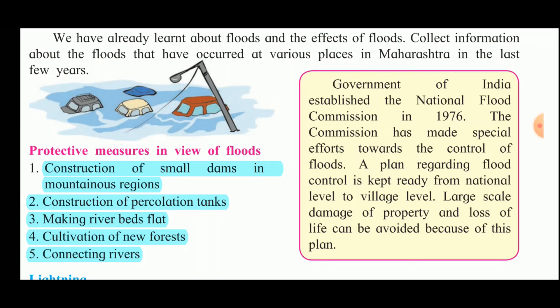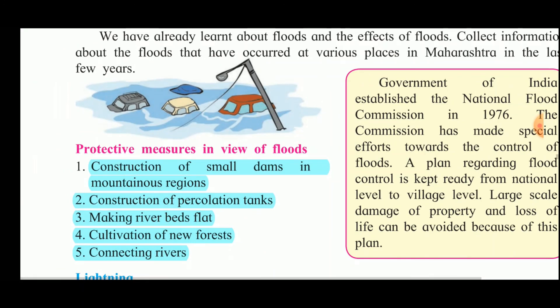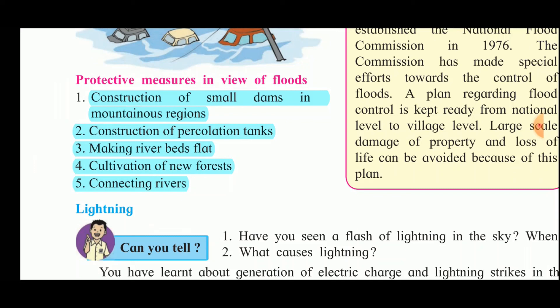Protective measures for floods include constructing small dams in mountainous regions, construction of percolation tanks where water is stored underground so it is absorbed by the soil and increases the underground water table, making river beds flat, cultivation of new forests, and connecting rivers so that if one river floods, water can be diverted to another. These are the protective measures to protect people from floods.